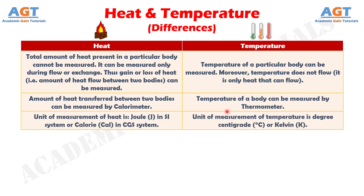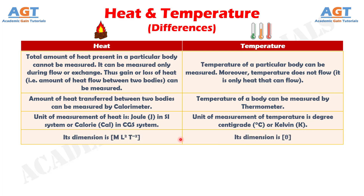Difference No. 7: The unit of measurement of heat is Joule in the SI system, or calorie in the CGS system, whereas the unit of measurement of temperature is degree centigrade or Kelvin. Difference No. 8: The dimension of heat is mL²T⁻², whereas the dimension of temperature is Theta (Θ).